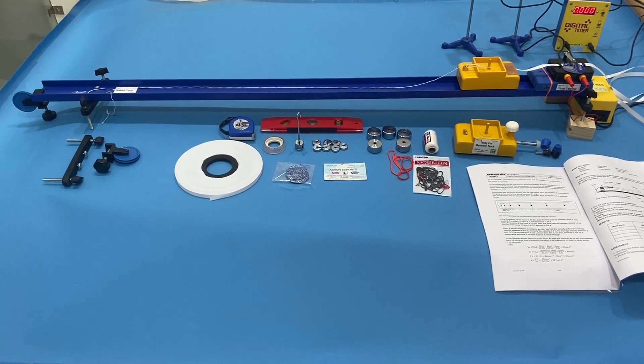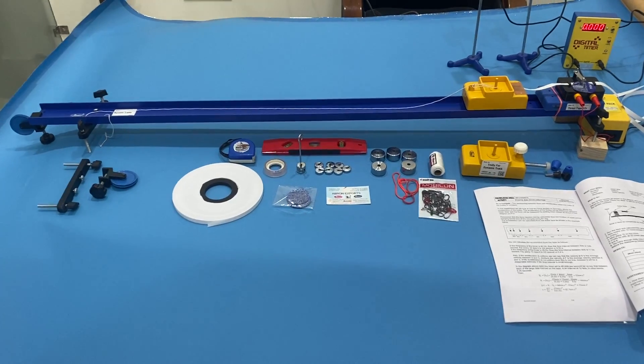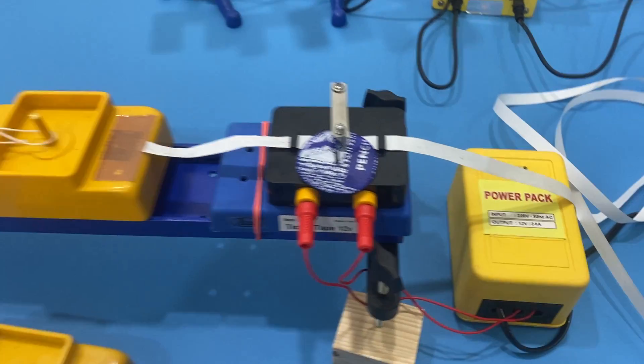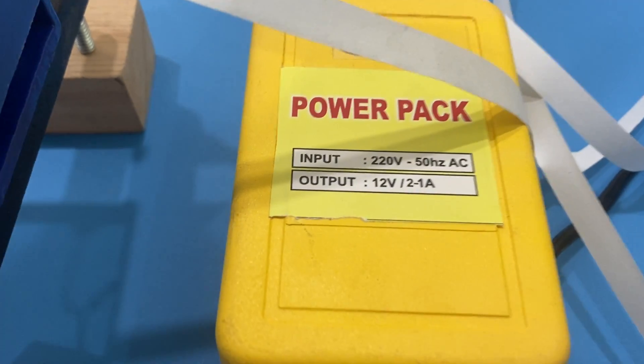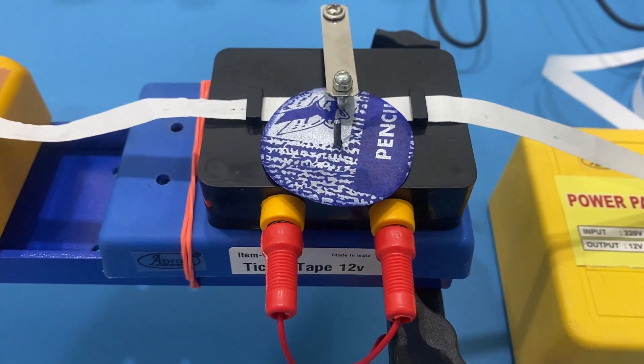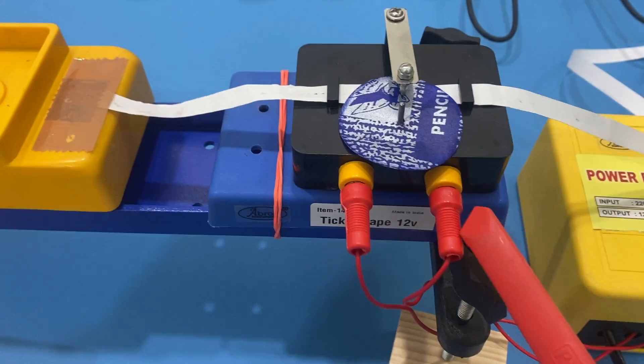This is the setup of a Brown Exports ticker tape timer trolley track. Let me tell you the parts. First of all, there is a power pack power supply which is about 12 volts and 2 to 1 ampere. With the power supply, there is a ticker tape timer with two sockets.